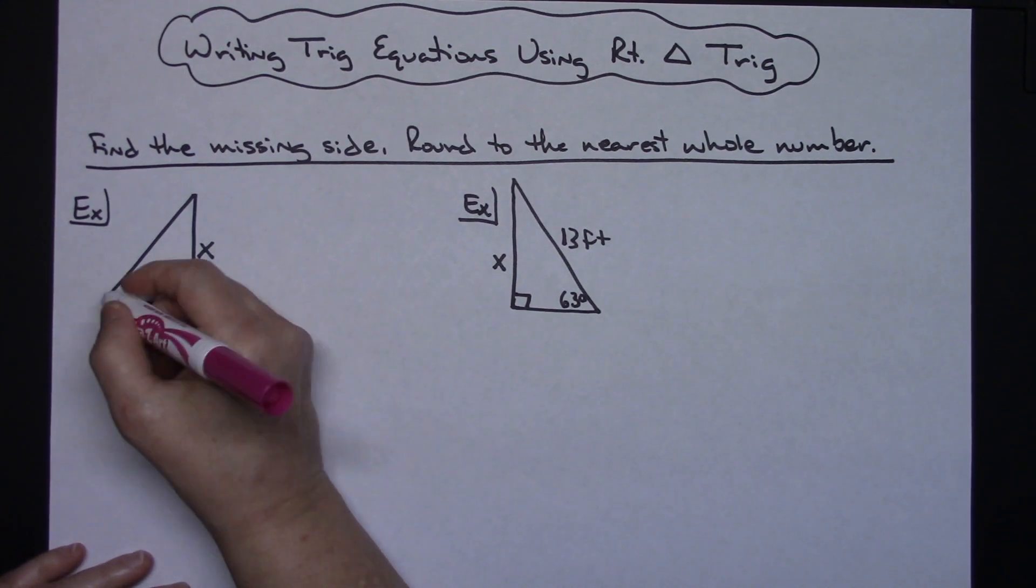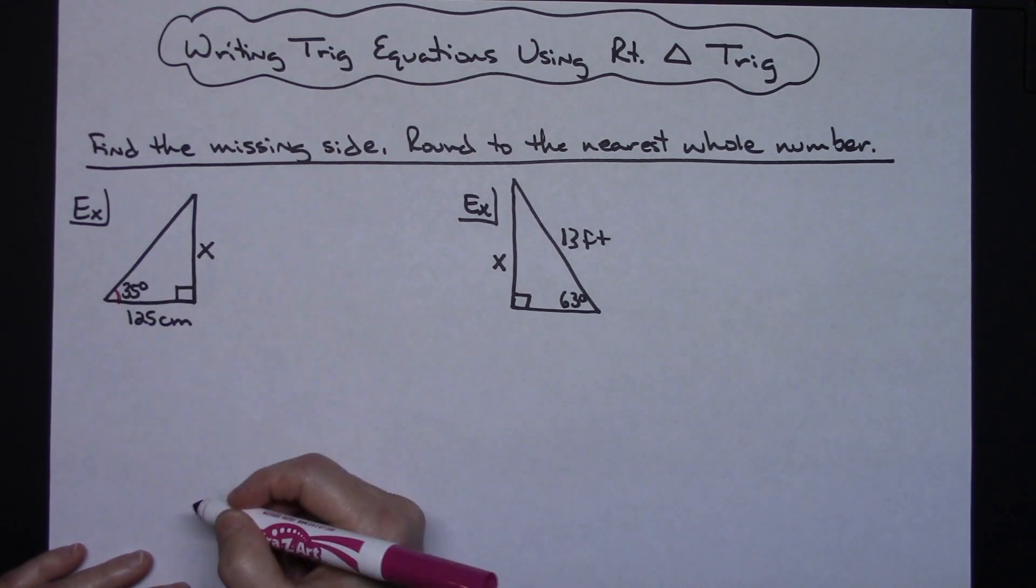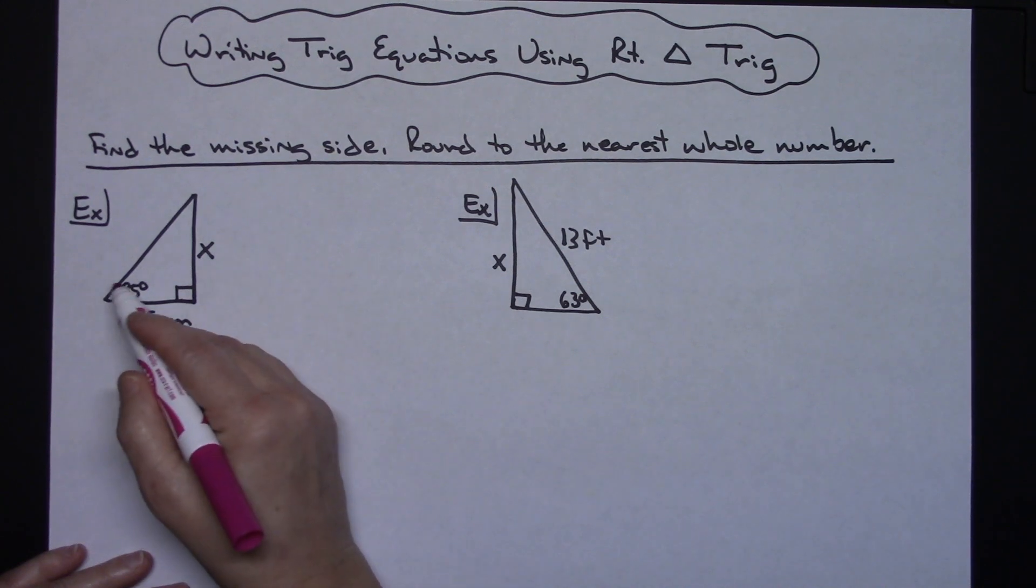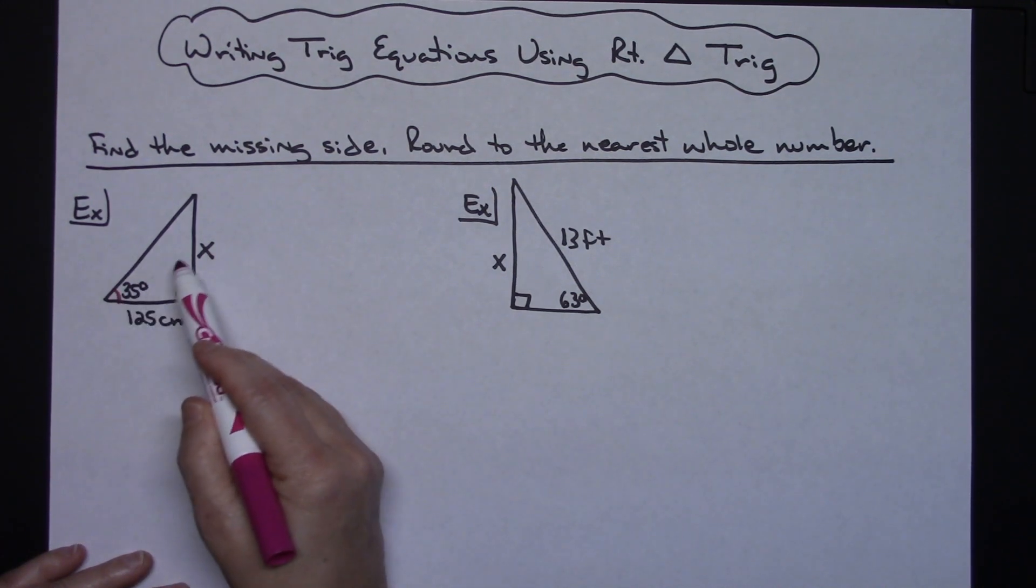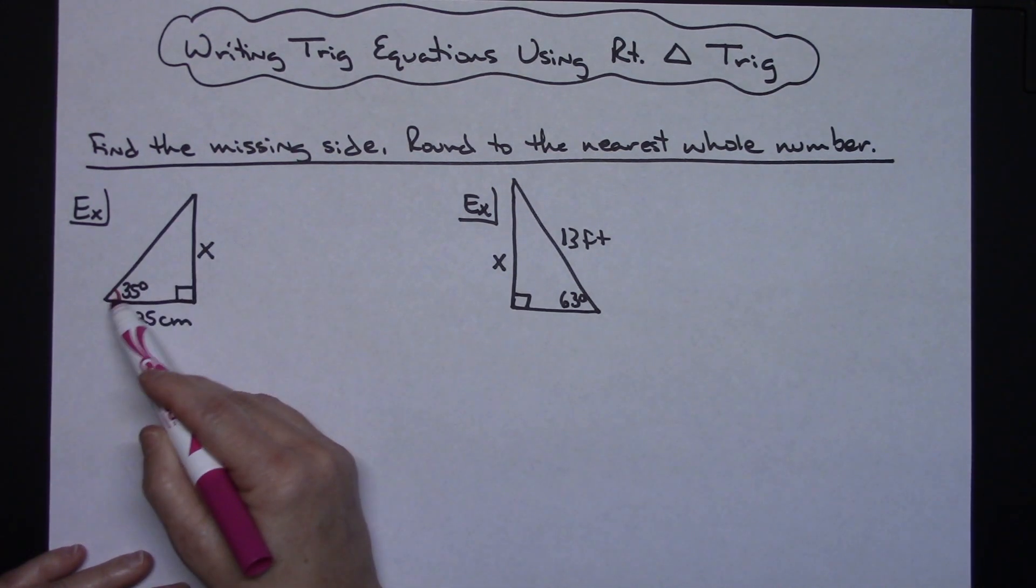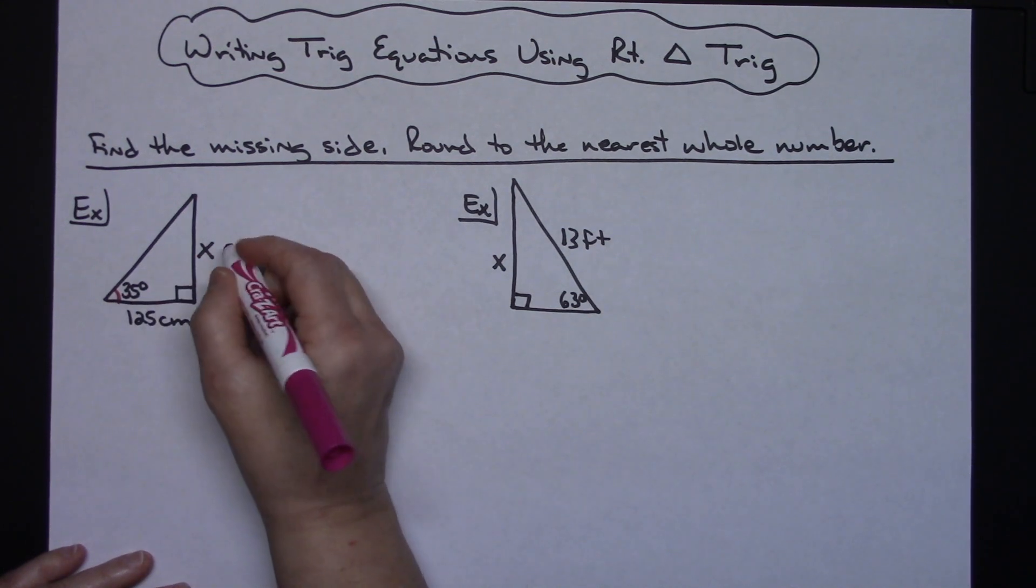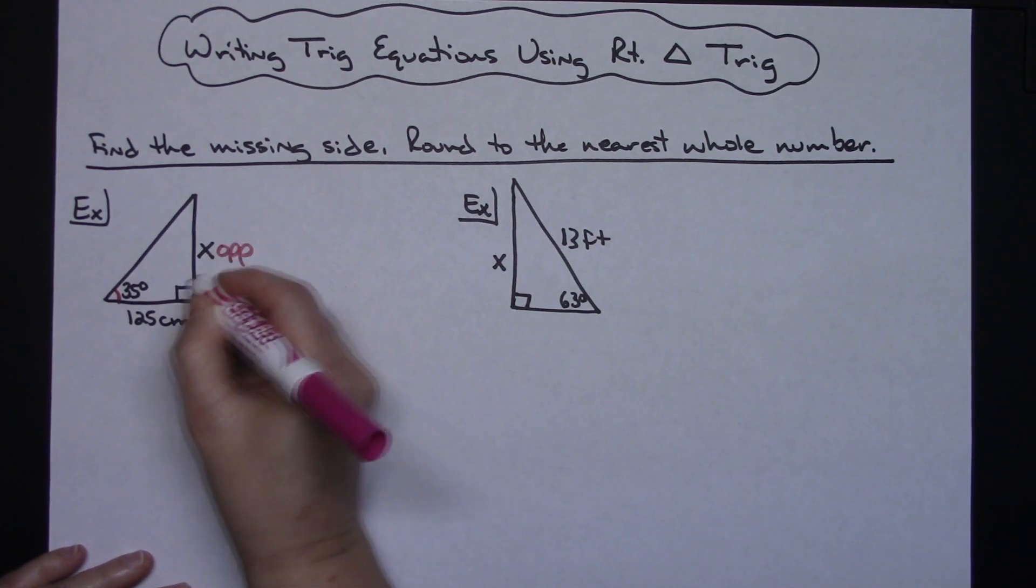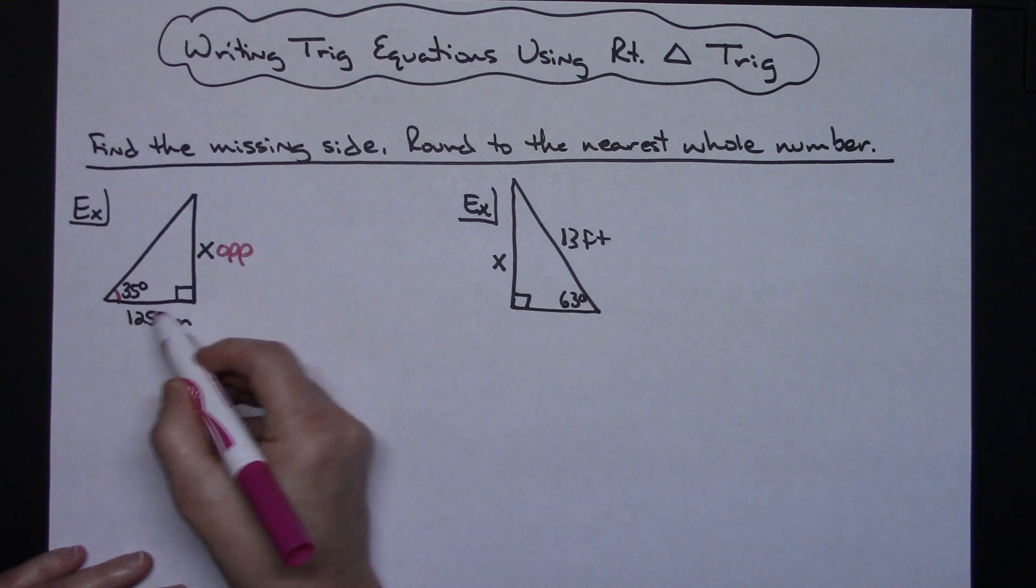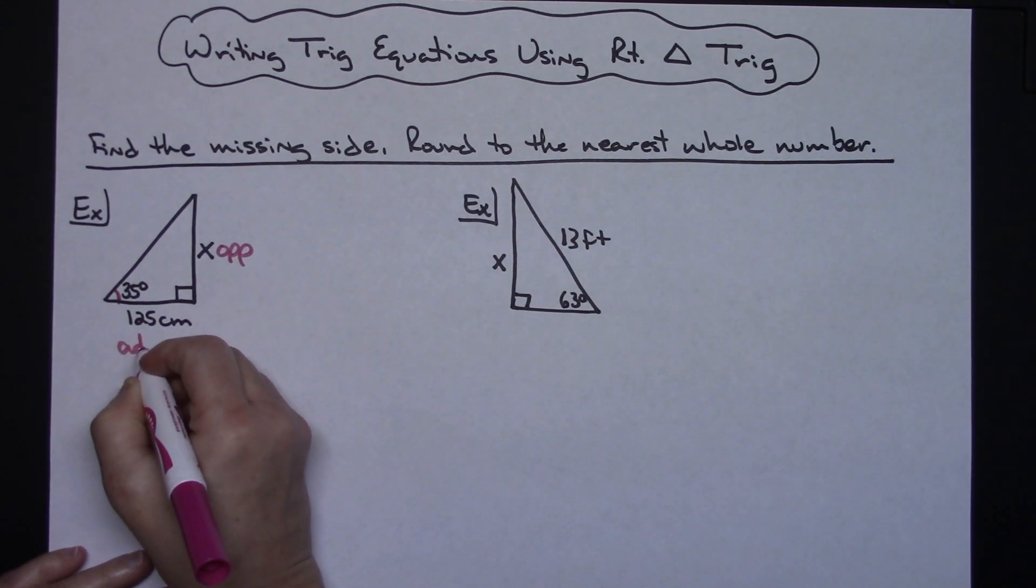Looking at this first problem, I'm given this 35 degree angle right here, so that's my reference angle. This X or missing side is going to be the opposite side to that reference angle, and this 125 side is going to be the adjacent side.